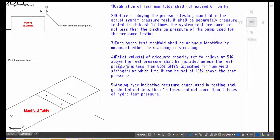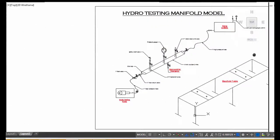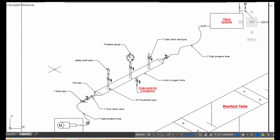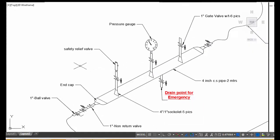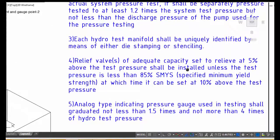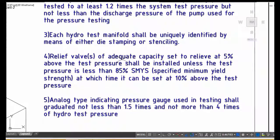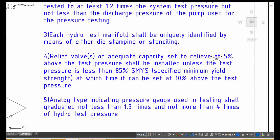And the relief valve - this relief valve should be 5 percentage above the hydrotesting pressure. Relief valve of adequate capacity set to relieve at 5% above the test pressure.